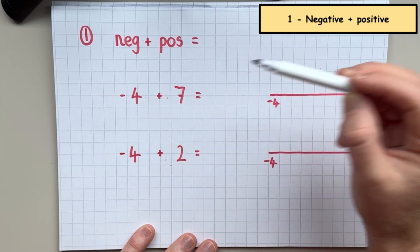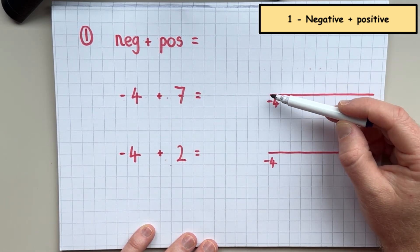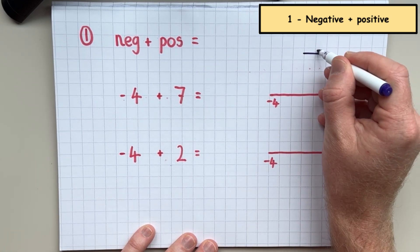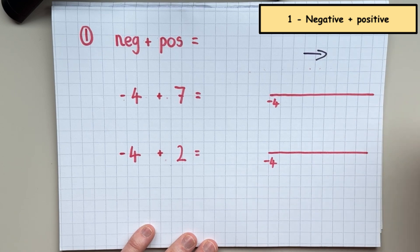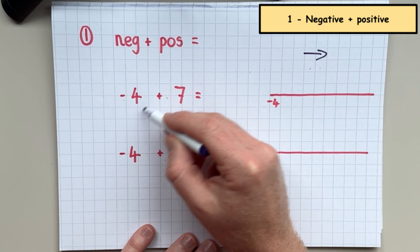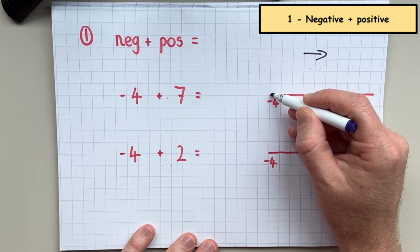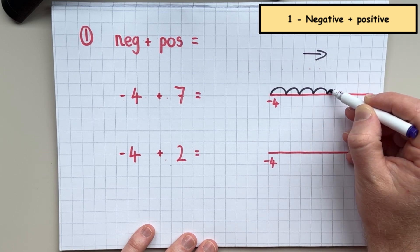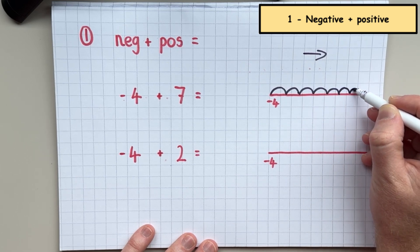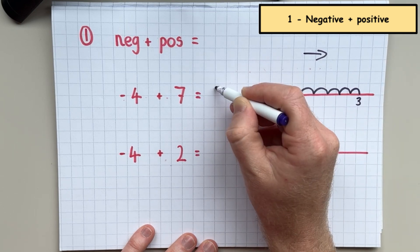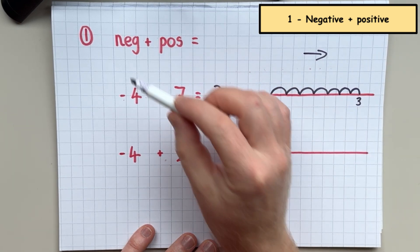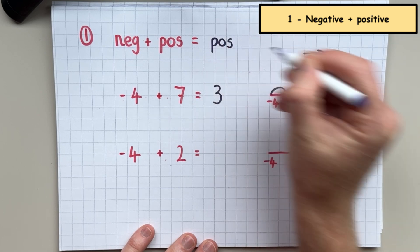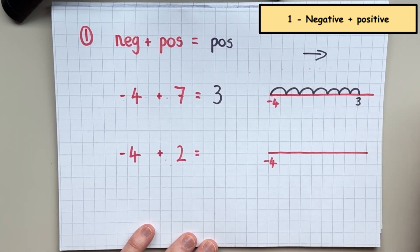So in this first example we've got negative four plus seven. If we think about this on a number line, when you're adding a positive number you're moving to the right. So I would start at negative four and simply make seven jumps: negative three, negative two, negative one, zero, positive one, positive two, positive three. That gives me an answer of three. So if you have a negative number and you're adding a positive number, you can get a positive number — most of the time you will get a positive answer.